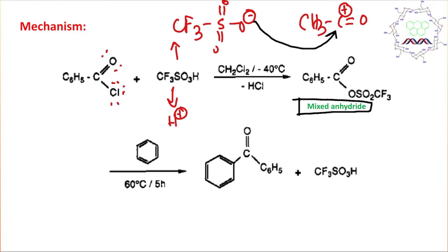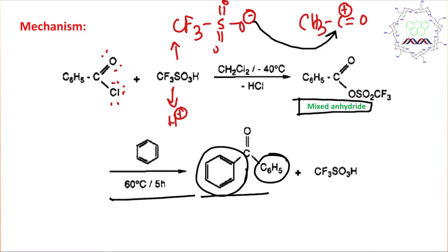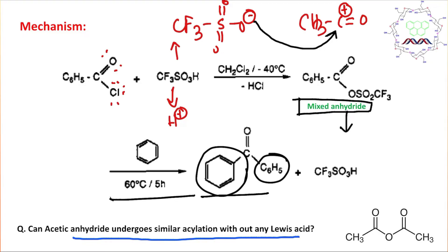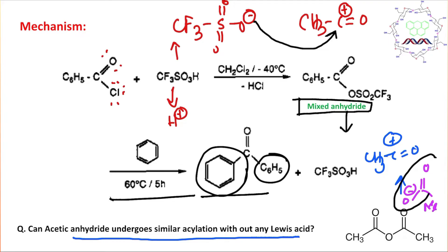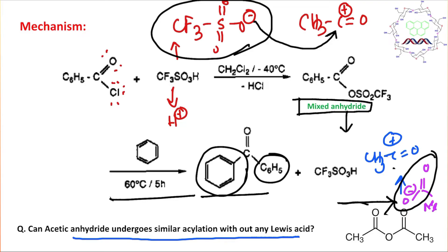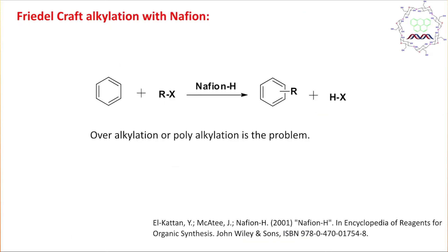This mixed anhydride undergoes Friedel-Kraft acylation with benzene, ultimately producing a diaryl ketone derivative. You might wonder: can acetic anhydride undergo a similar reaction without a Lewis acid? No — when acetic anhydride generates an acylium cation, the counterpart is acetate anion, which is not as stable or delocalized as trifluoromethanesulfonate. So the reaction does not proceed without a Lewis acid, but adding a Lewis acid stabilizes the acetate negative charge and the reaction progresses.